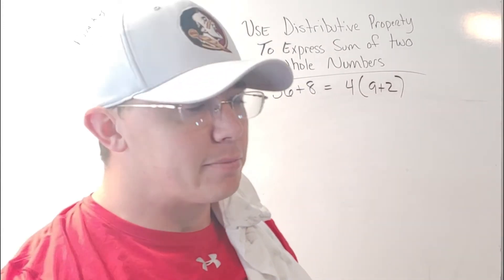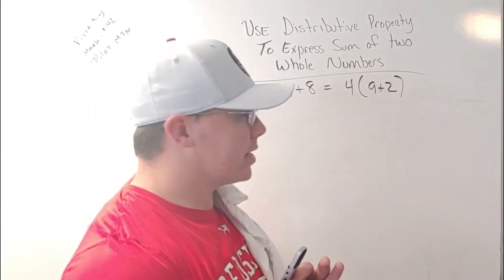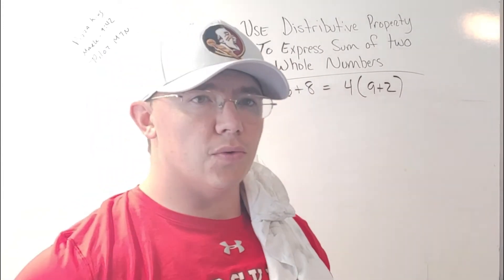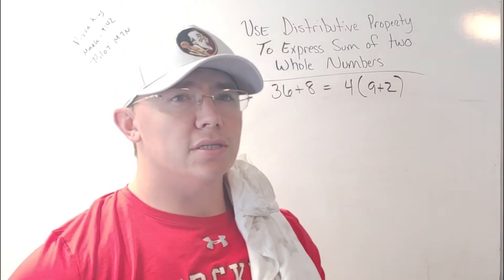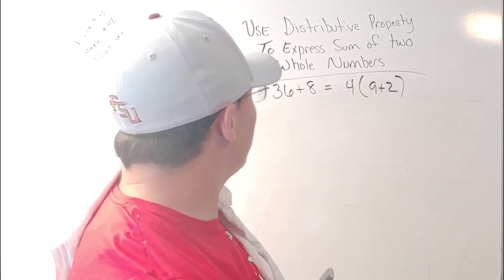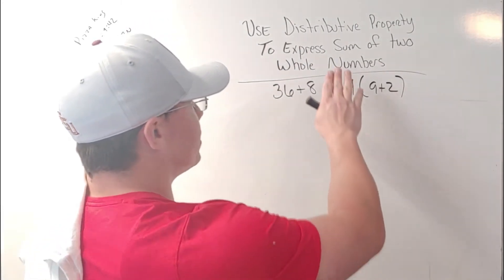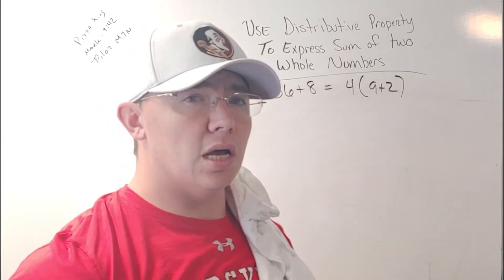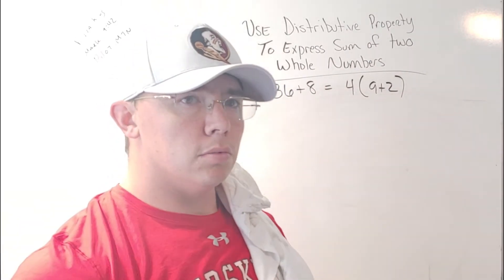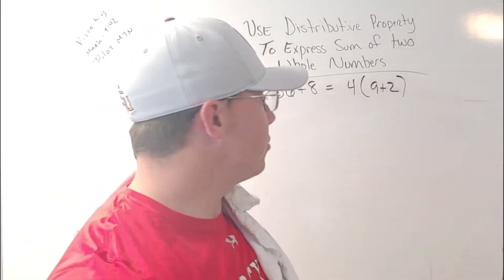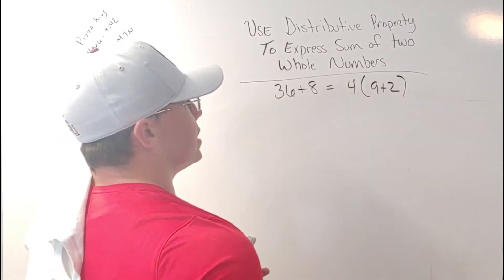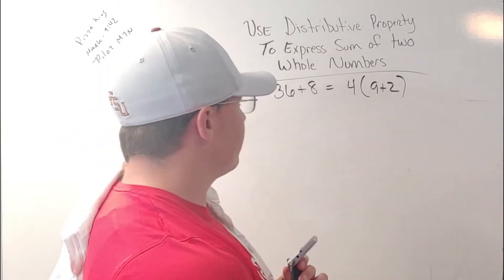All right, now here's the second part — the second part of this standard. It's using the greatest common factor to apply the distributive property to express the sum of two whole numbers. What does that mean? Well, here we go. In the standard, this is the example they give.